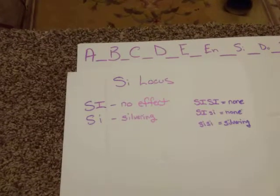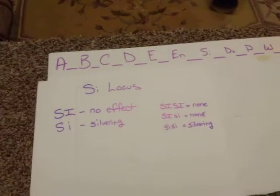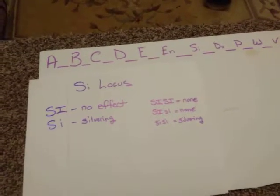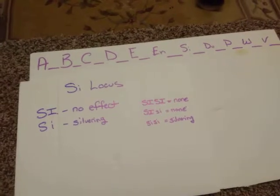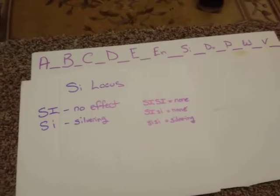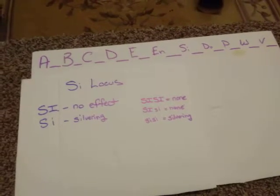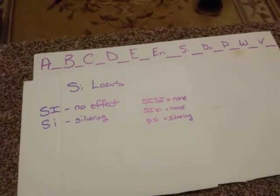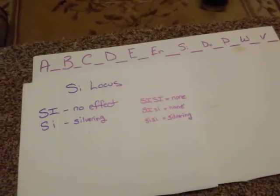As we've learned in previous loci points, the only time that you will see the color actually present in your rabbit is if you have two copies of a recessive present. Like we learned in the A locus, the only way you get a self to actually present in the color of your rabbit as a self-based color, you have to have two copies of that self allele, which is also the most recessive at A. It's the same way with the silver ring here.